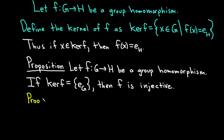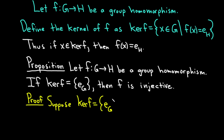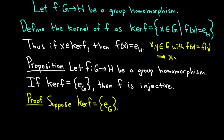So let's go through this proof. This is an if-then statement, so we start by assuming the hypothesis. Suppose that ker(f) equals the set containing only the identity element of G. The claim is that f is injective. Recall what it means for f to be injective: whenever you have x, y in G with f(x) equals f(y), that should imply that x equals y.